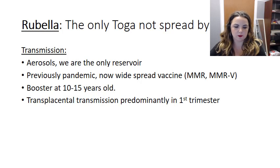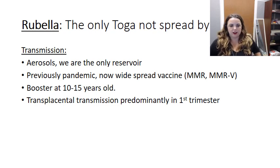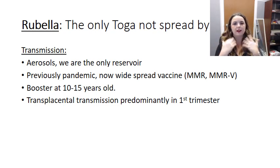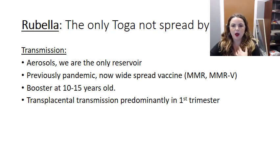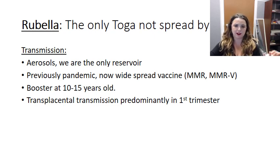So rubella is an aerosol virus — basically coughing, sneezing, talking, spitting — that's how we spread it person to person. Prior to the vaccine, this one ran rampant through communities, as you would expect with any good aerosolized virus.